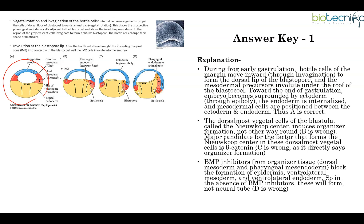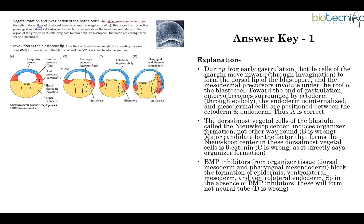This is the blastula structure of an amphibian embryo. Gastrulation starts from the dorsal side — the prospective dorsal side, which is the backside of the organism. This part of the embryo forms the backside, while the front part forms the ventral side. The gastrulation process starts with internal cell rearrangements which propel the cells of the dorsal floor of the blastocoel towards the animal cap.